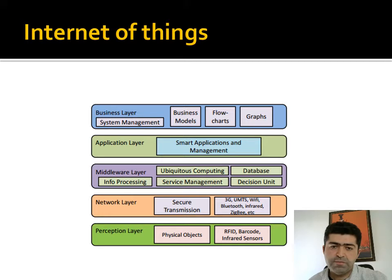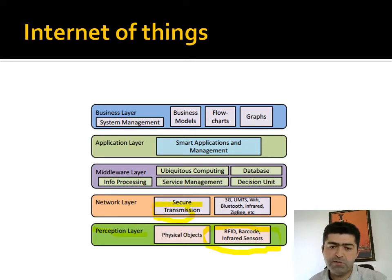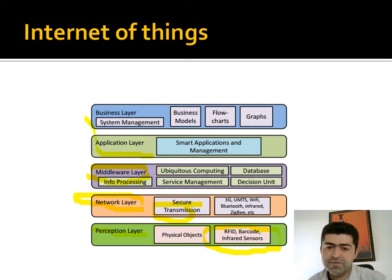A generic architecture of Internet of Things is shown in this figure. The data is abstracted in the perception layer by using sensors and is securely transmitted through the network layer. In the middle layer, the data is converted into information by being processed. At the end layers, the information is used for the end use cases by end users.